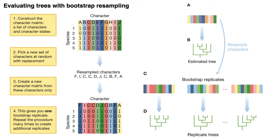We can establish our level of confidence in the validity of a tree with different methods, including bootstrap resampling and odds ratio testing. Bootstrap resampling repeatedly and randomly chooses a subset of characters to see how frequently a given branching pattern is found for those same taxa. Odds ratio testing is an actual statistical test that compares the performance of a tree with or without constraining a given group to be monophyletic.